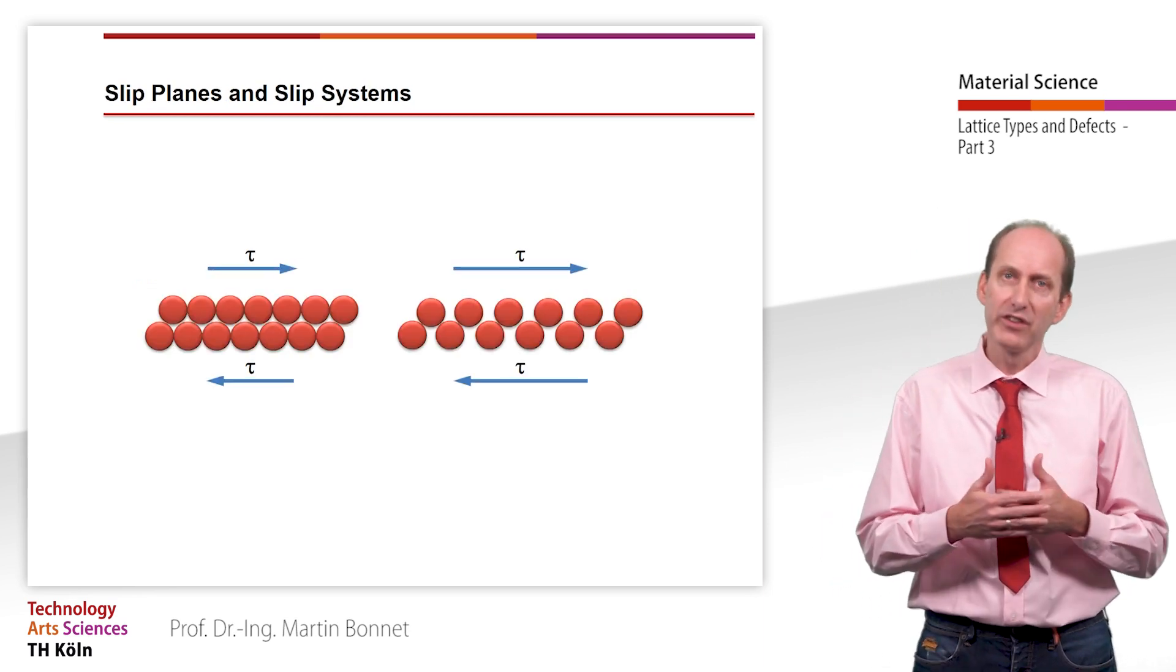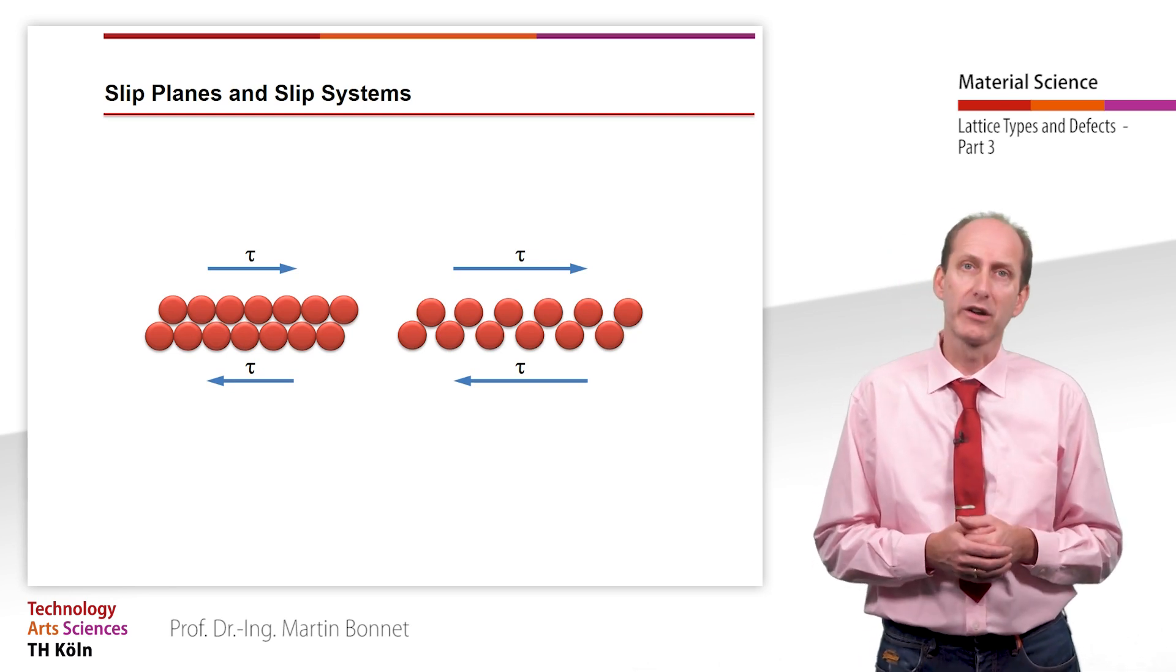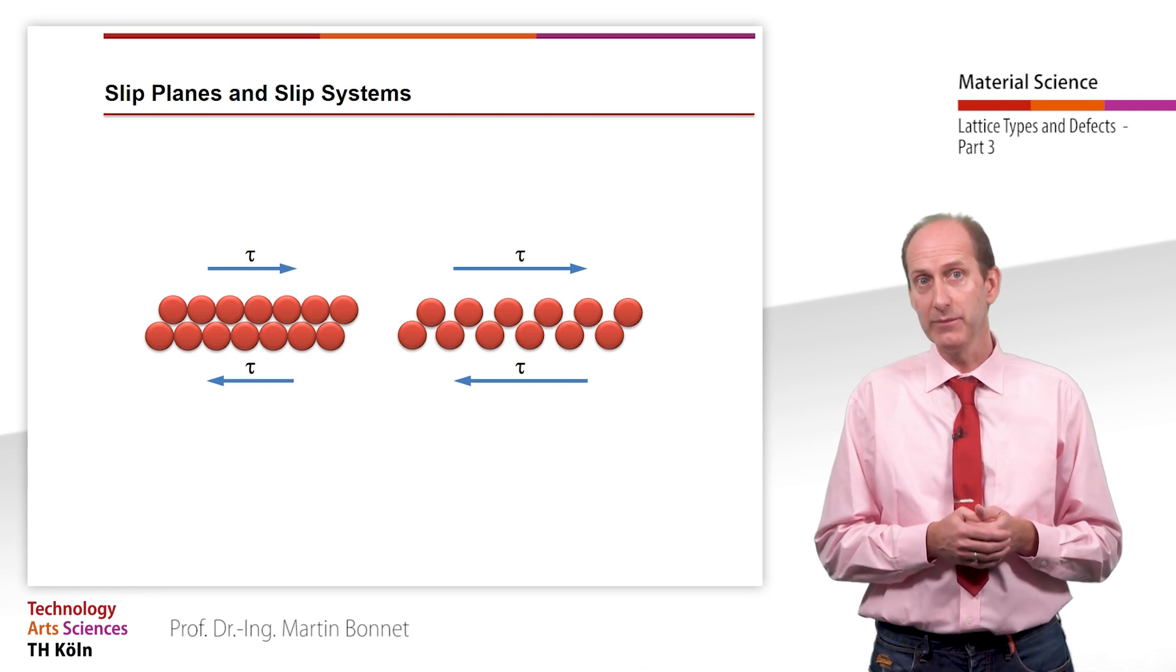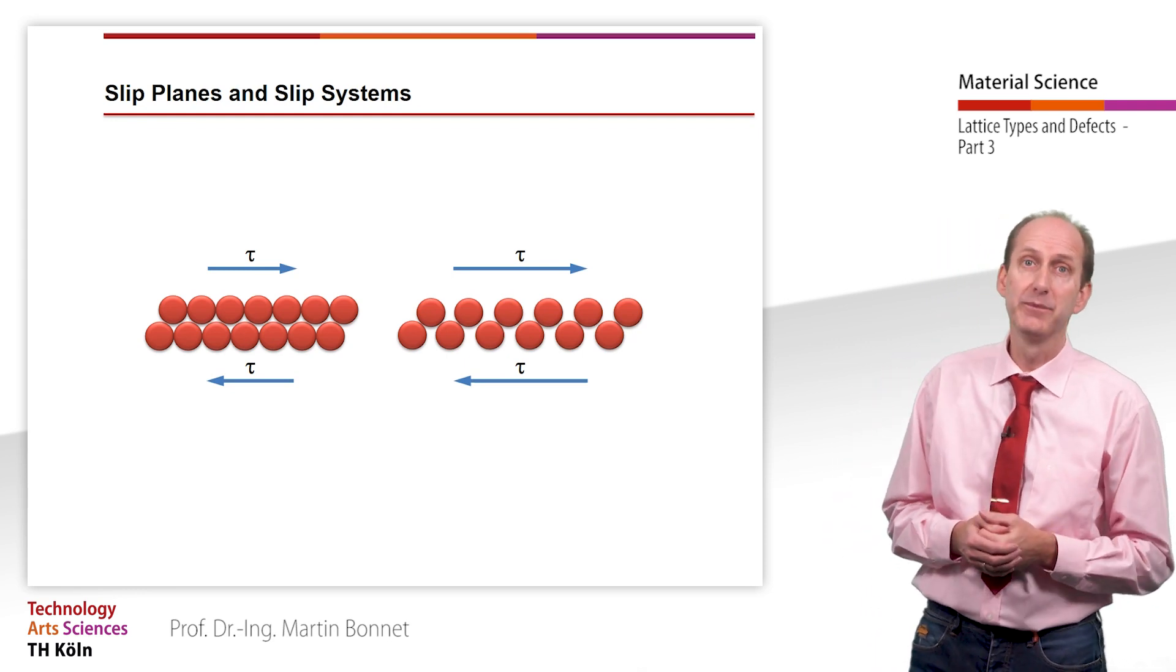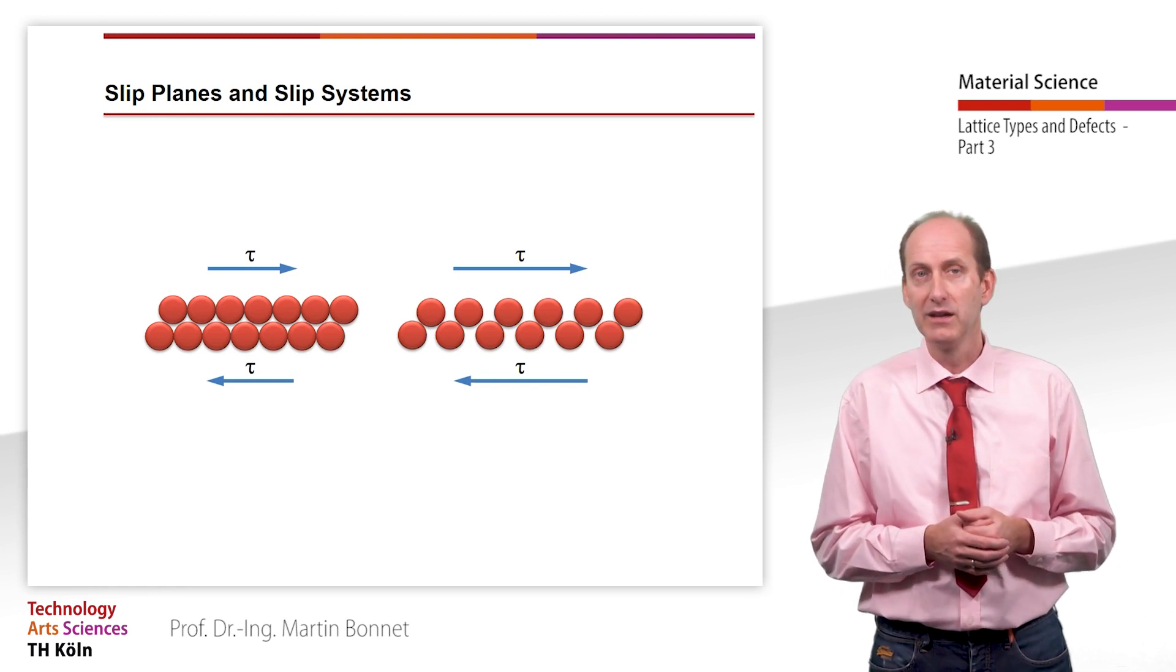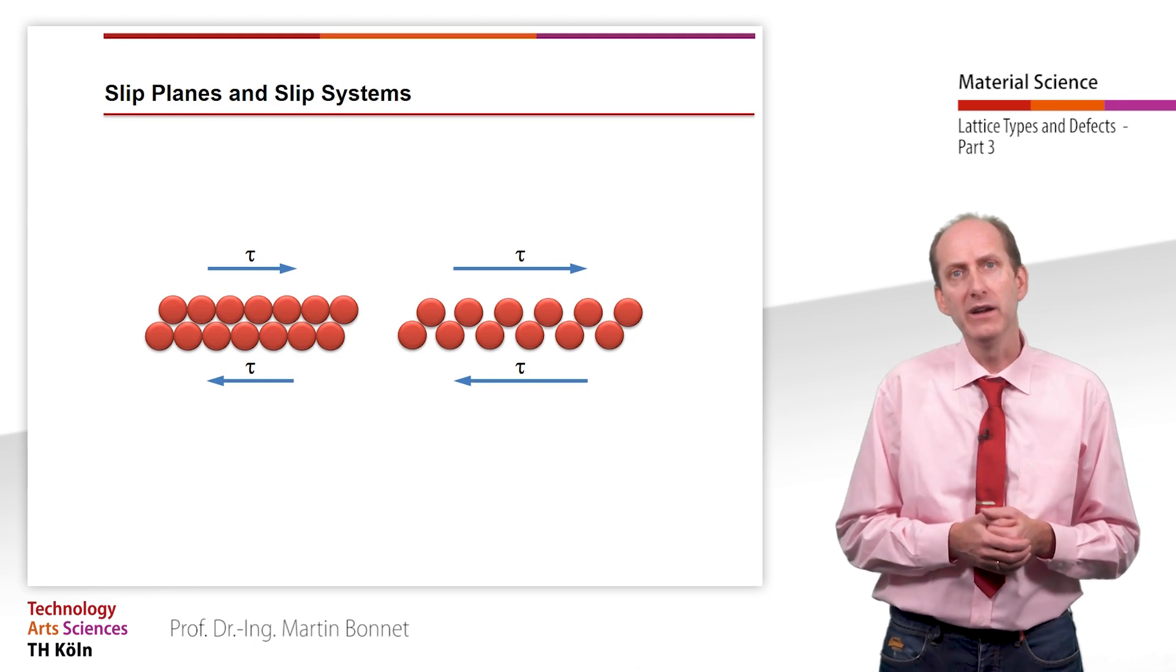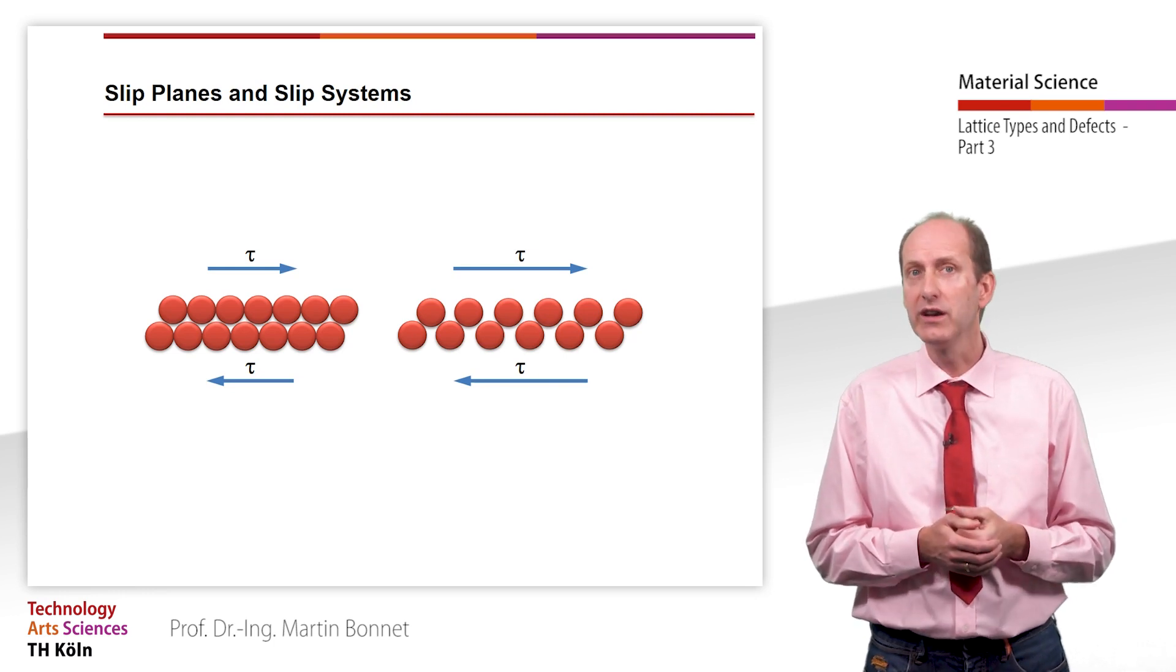So-called slip planes are particularly useful for dislocation motion. Slip planes are characterized by two properties. These are first, lattice planes with the highest possible atomic density, which means with a small interatomic distance. Second, lattice planes at the greatest possible distance from the next parallel plane. These conditions result in the lowest possible shear stress necessary for dislocation motion. This figure illustrates why the required shear stress for sliding planes continuously decreases with increasing atomic density.